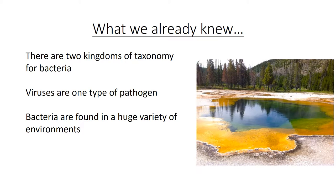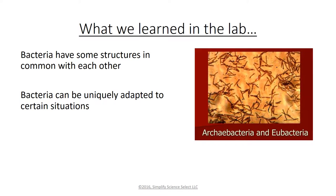We already know there are two kingdoms of taxonomy for bacteria: eubacteria and archaeabacteria. Viruses are one type of pathogen, and a very small number of bacteria can be another kind of pathogen. Bacteria are very diverse, found in a huge variety of environments. Some structures are common to all bacteria, while others are specific to certain bacteria that have adapted to very specific environments.